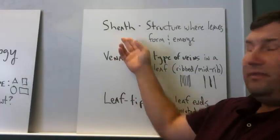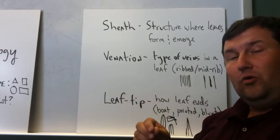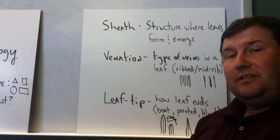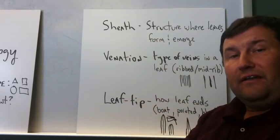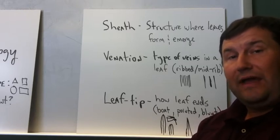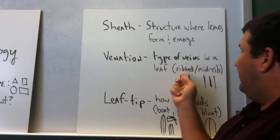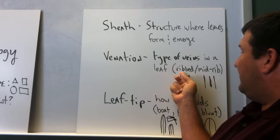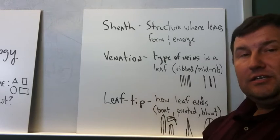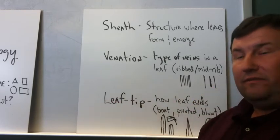Three other structures: the sheath that we've talked about with regards to how the leaf is rolled or folded inside of it is the structure where the leaves form and emerge. The sheath doesn't play a major role in the identification of turf grasses except for how we use it to determine vernation, which is how that leaf is arranged inside the sheath. The venation, or the type of veins in a leaf, generally come in two shapes: ribbed and midrib. Ribbed is a series of small veins across the entire leaf width, whereas the midrib is usually a prominent vein in the center of the leaf.